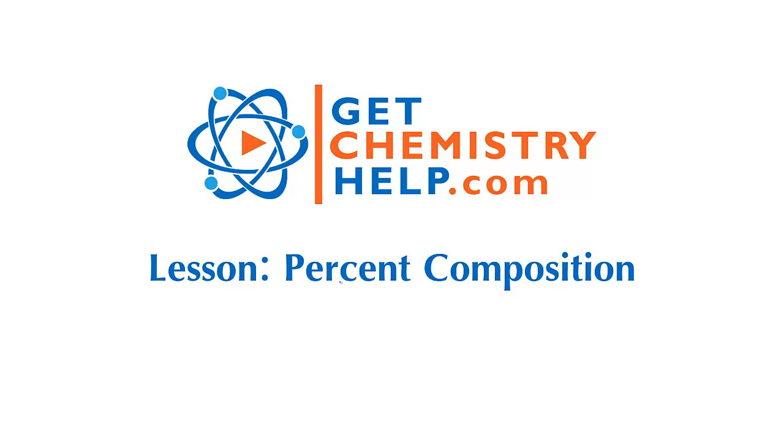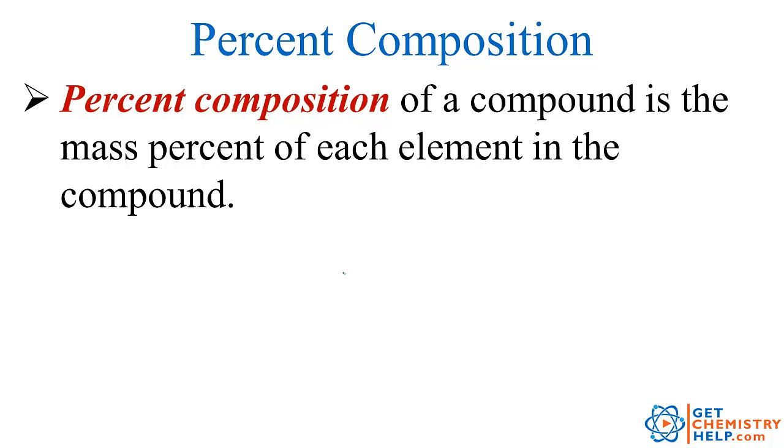Welcome to GetChemistryHelp.com. My name is Dr. Kent, and in this lesson I'm going to show you how to calculate the percent composition of a compound. The percent composition is basically just the percent of every element that is present in the compound calculated by mass. For example, let's say our compound was water, H₂O. The percent composition would tell me what percentage of water is hydrogen by mass and what percentage of the compound is oxygen by mass.